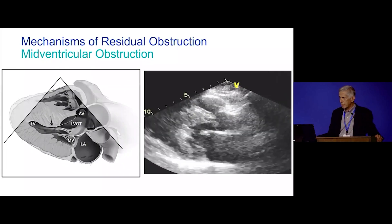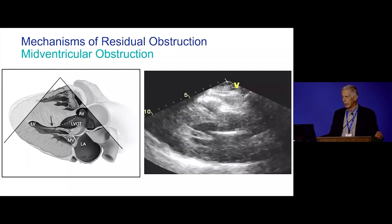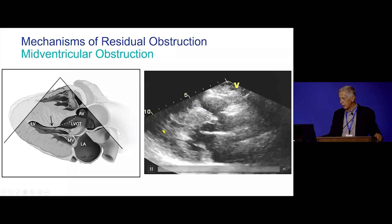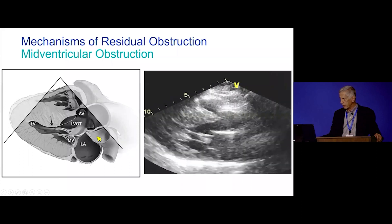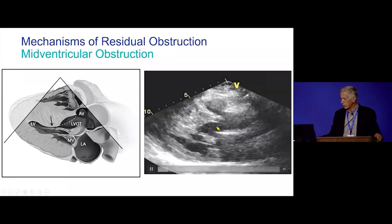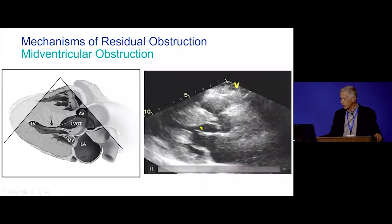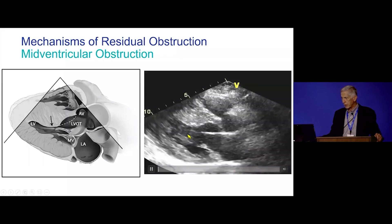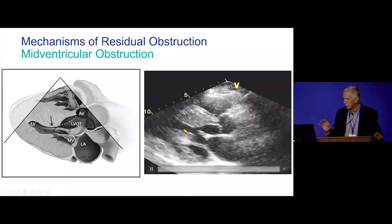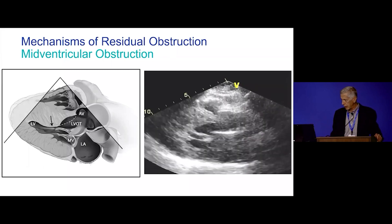It's important to recognize the length of subaortic obstruction, because if you don't relieve it fully, patients will come back with mid-ventricular obstruction. This is a patient referred for re-operation — the surgeon during the first procedure got rid of the subaortic obstruction and there's no SAM, but now there is severe mid-ventricular obstruction and the patient remains symptomatic. The approach for this patient would be a transapical mid-ventricular myectomy.